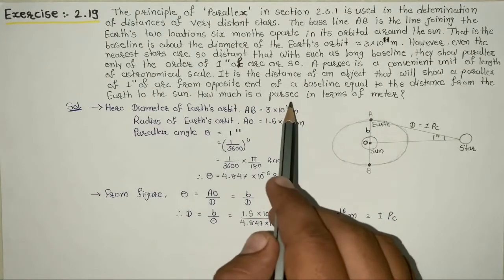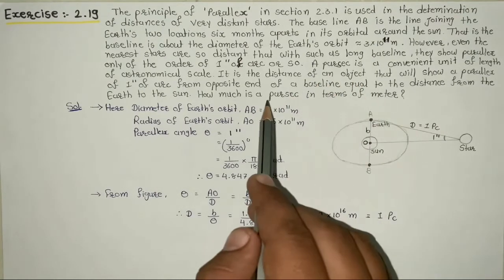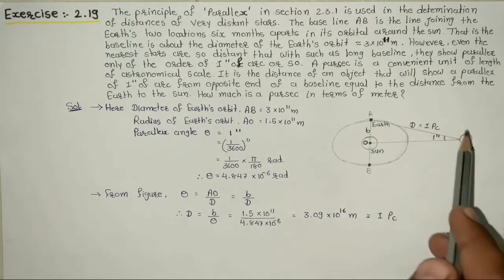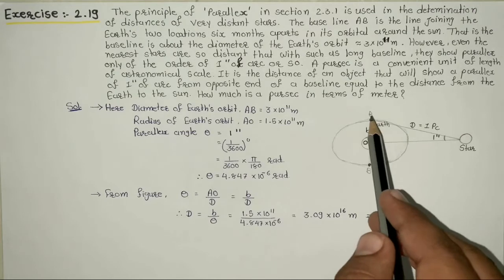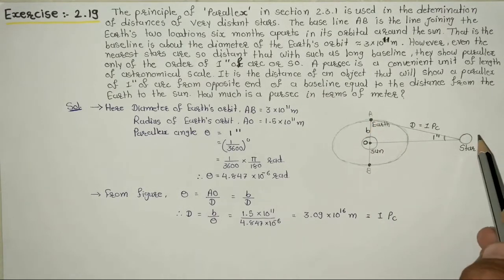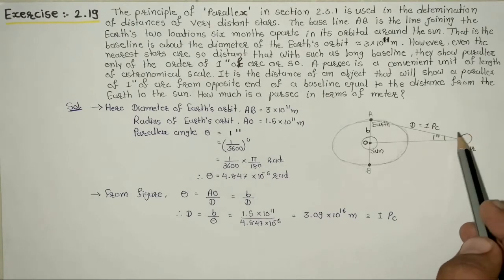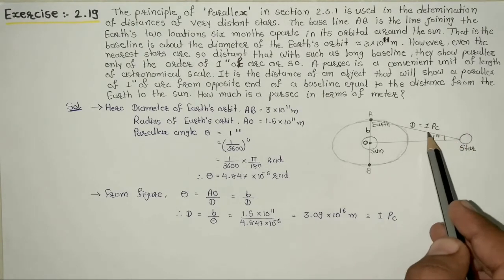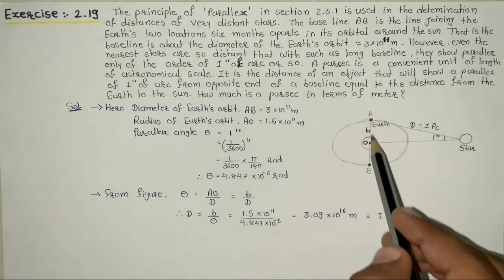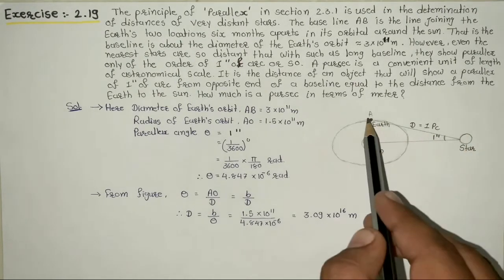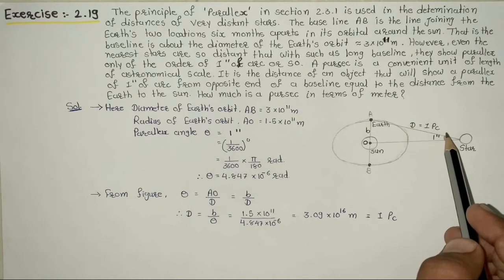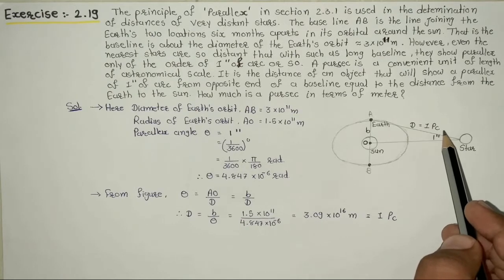How much is a parsec in terms of meters? We need to find parsec value in terms of meters. What is parsec? It is a distance. When we observe an object from the baseline between Earth and Sun, and that object makes a parallax of one second of arc, then the distance between baseline and object is one parsec. We need to find this one parsec in terms of meters.